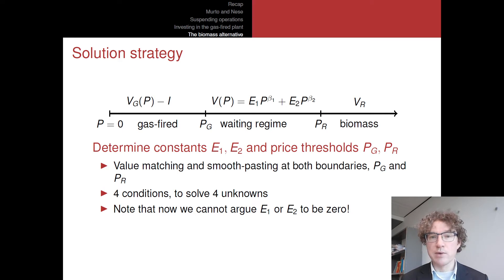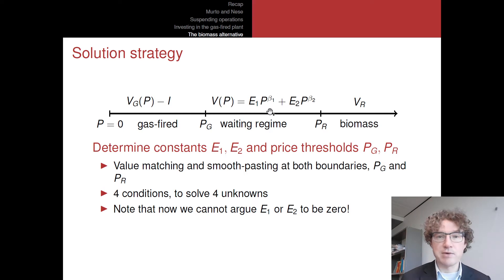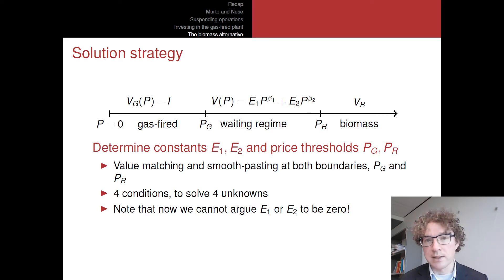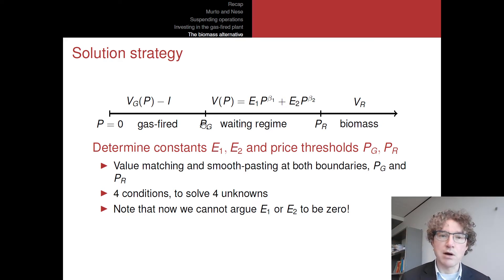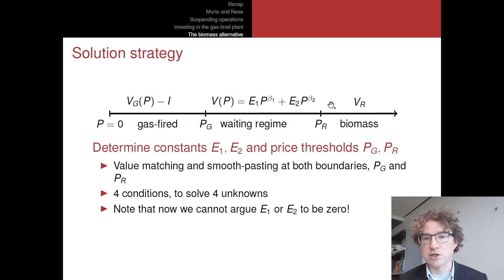This option to wait will satisfy the Bellman equation without cash flows — our familiar Bellman equation — again with some coefficients, different coefficients here, so I'll call them E1 and E2, times these power functions P to the power beta 1 and P to the power beta 2, which is basically the generic solution that we know. What remains is to figure out what these constants E1 and E2 are, and what are these thresholds PG — which will trigger the switch to making the investment in the gas-fired plant — or PR, when the price gets high enough to make the investment in the biomass plant. So there are four unknowns: E1, E2, PG, and PR.